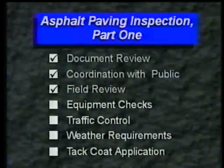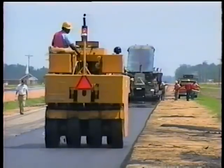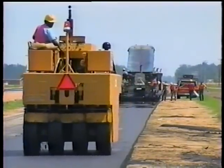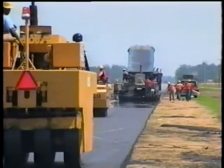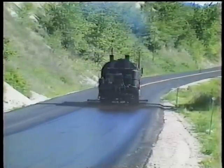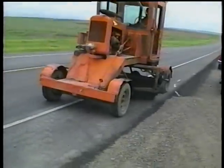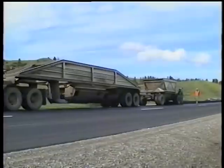Once the surface is properly prepared, your next preliminary responsibility is to check the paving equipment. Get familiar with the equipment that will be used. The paving train consists of haul trucks, a paver, and two or more rollers. A distributor applies the tack coat to bond the pavement to the underlying surface, and a power broom sweeps off the surface ahead of the tack application. Now let's take a closer look at each, beginning with haul trucks.